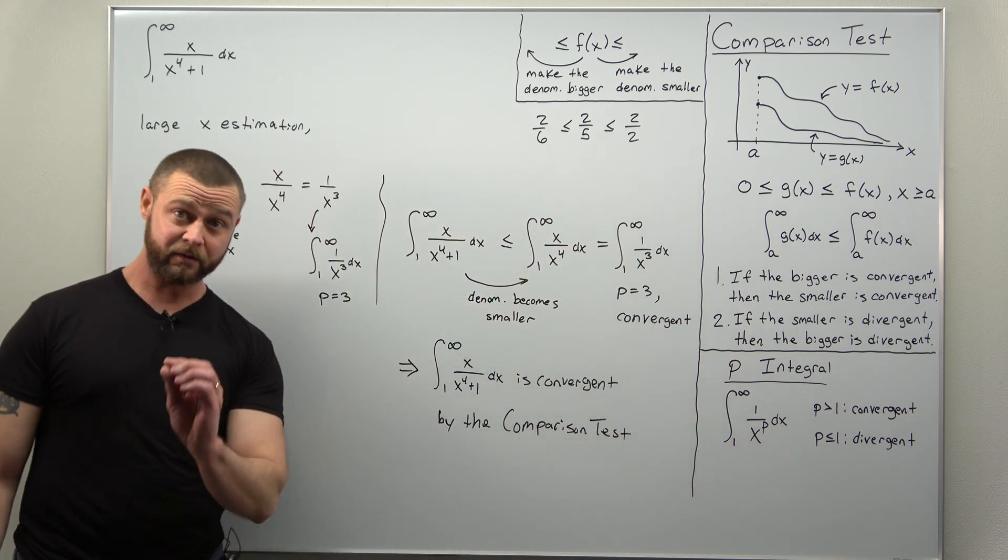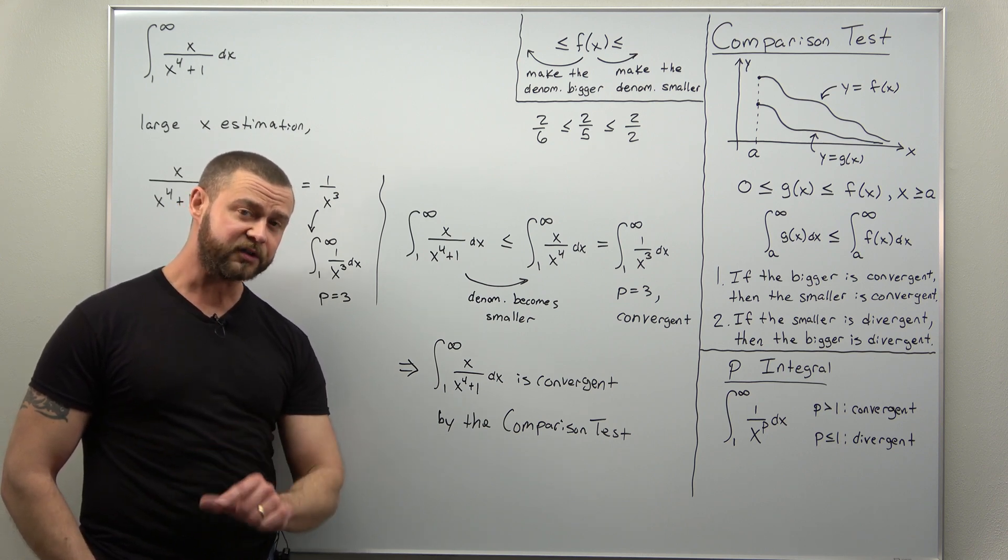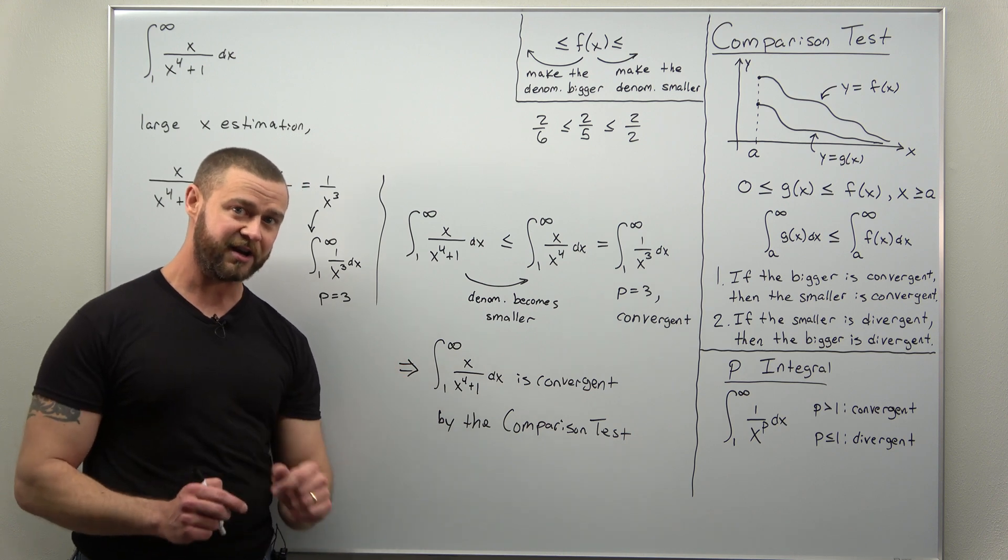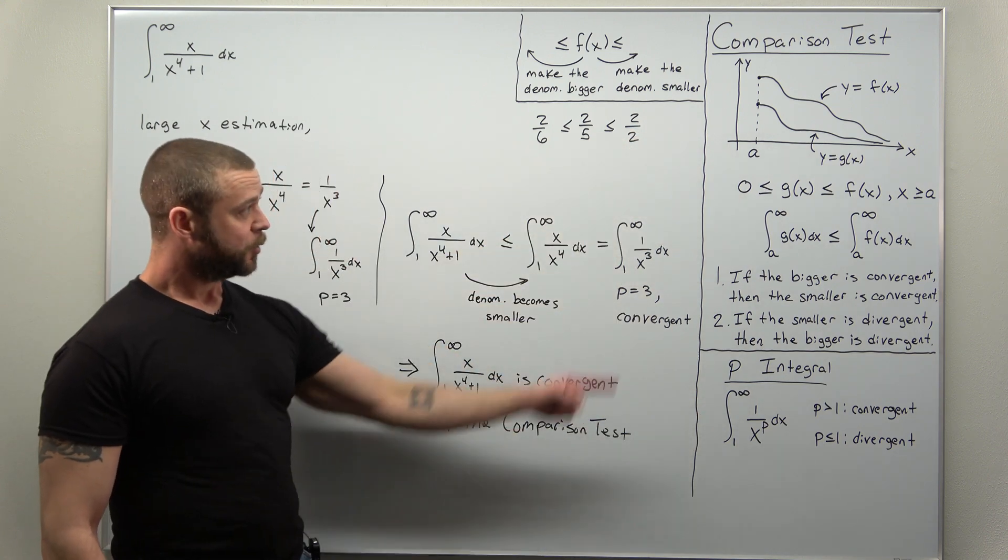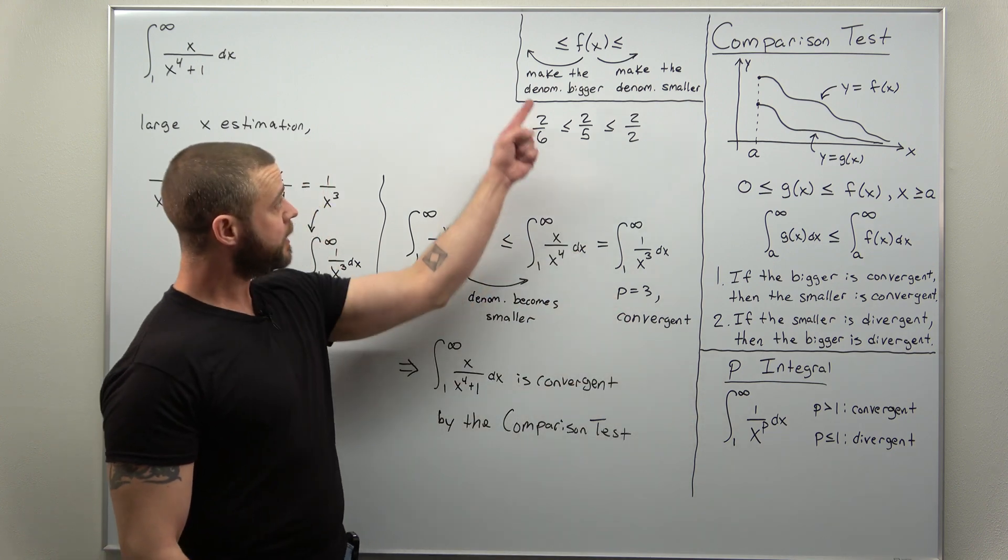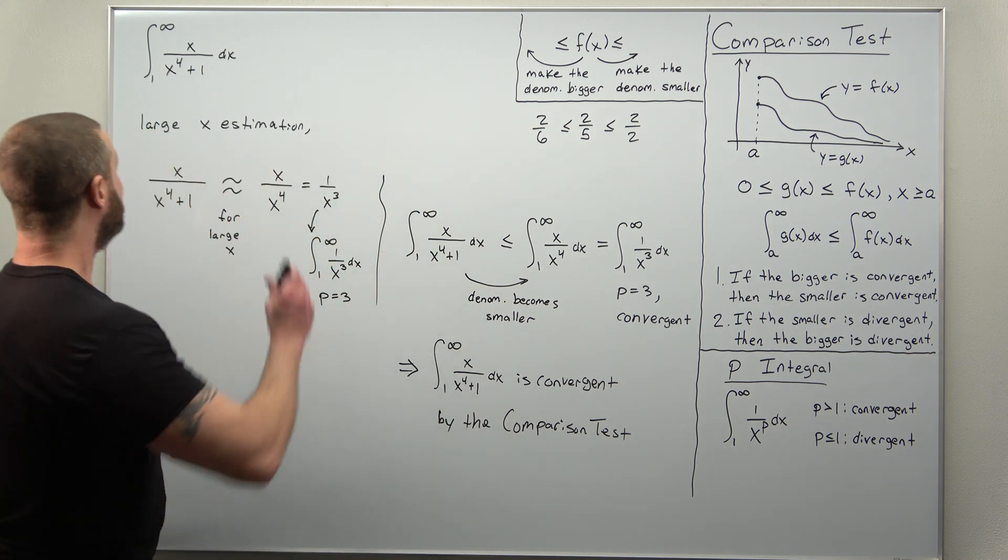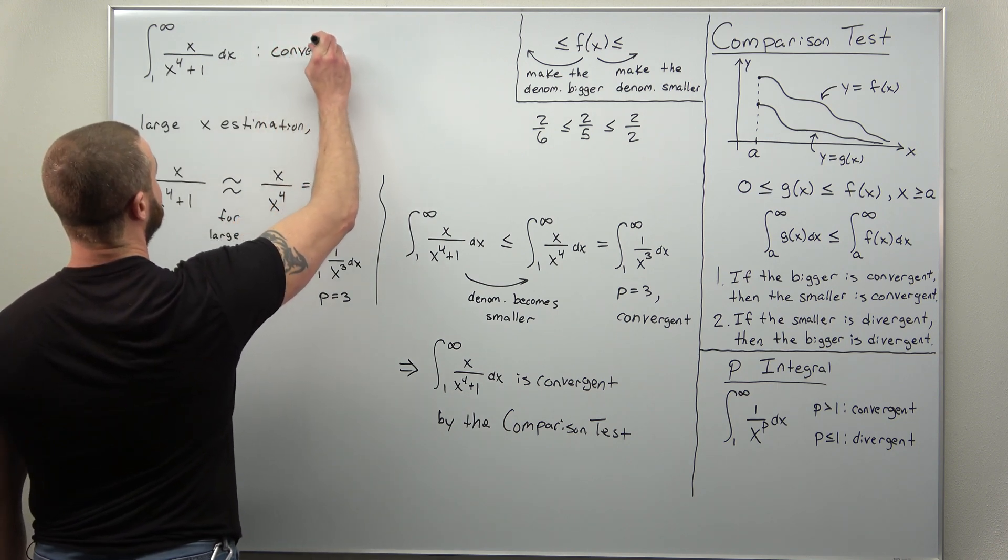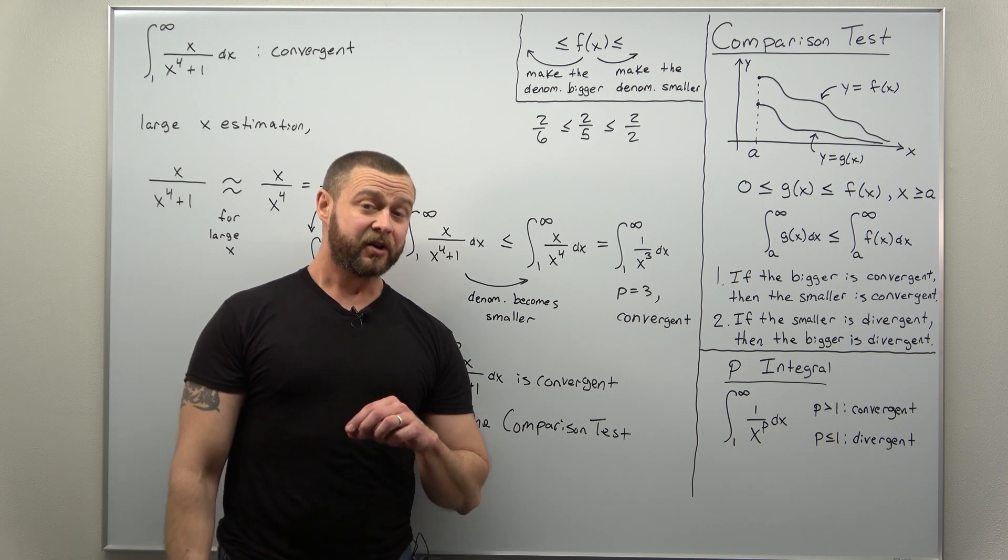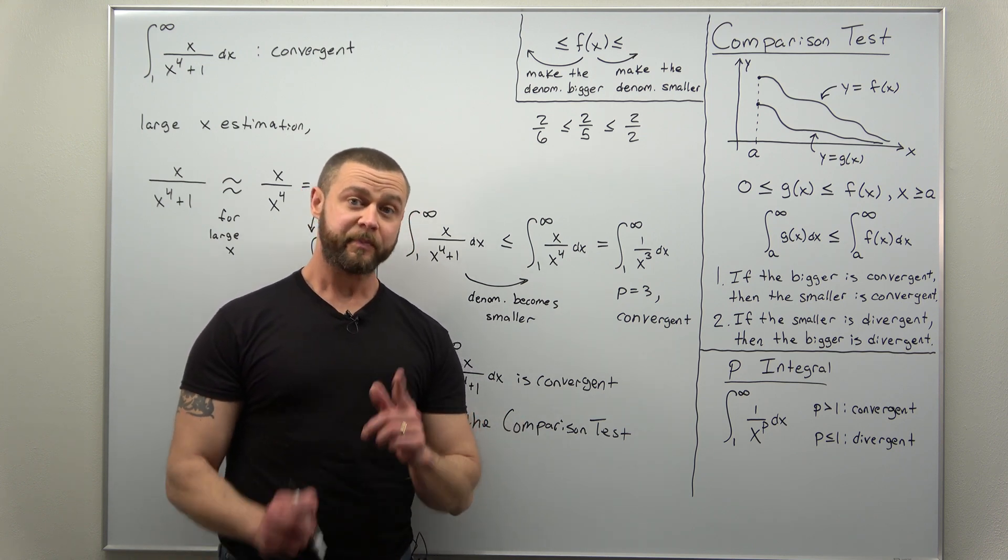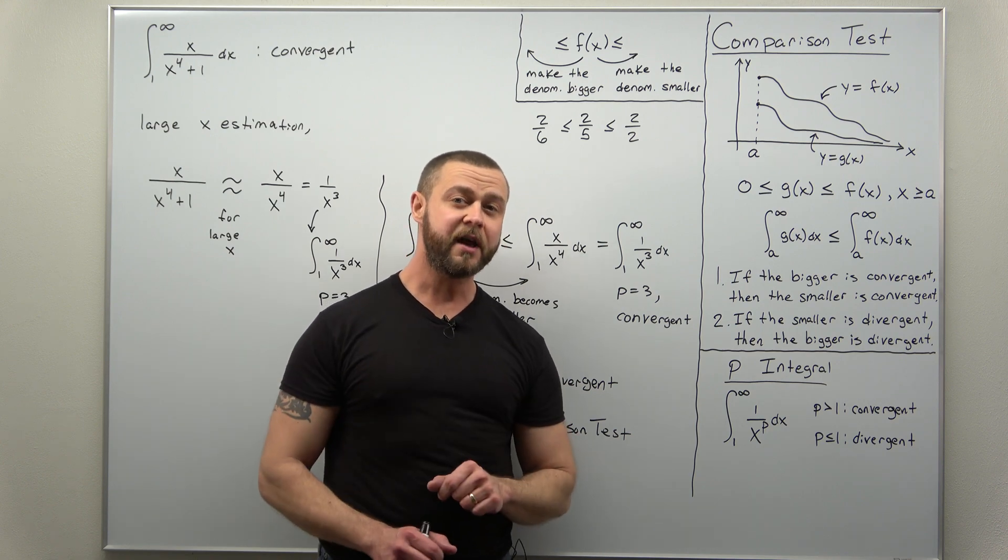And if you take a look at the work compared to what you recently have done with your integration methods, this work is all pretty minimal. At this point in your Calc 2 course, the problems are more conceptually challenging than challenging in terms of lengthy calculations. So, just make sure you're on top of all these ideas, what the comparison test says, the p integral, and more importantly, how you find bigger and smaller functions. So, for this improper integral, we've determined this one is convergent. What the comparison test does not tell you is what the improper integral converges to. All right, that's it. Hope you enjoyed the video, all the little tips and tricks we're mentioning. If you're finding this useful, support the channel, like, and subscribe.